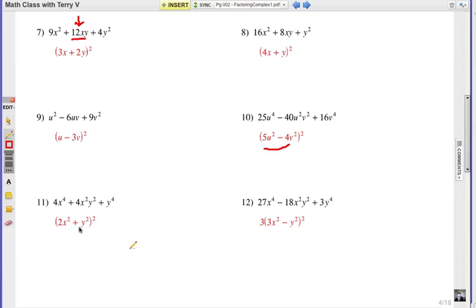Number 11, 2x squared plus y squared, that whole thing quantity squared is the factored answer. And again, the product would be a 2 coefficient there double to make 4.